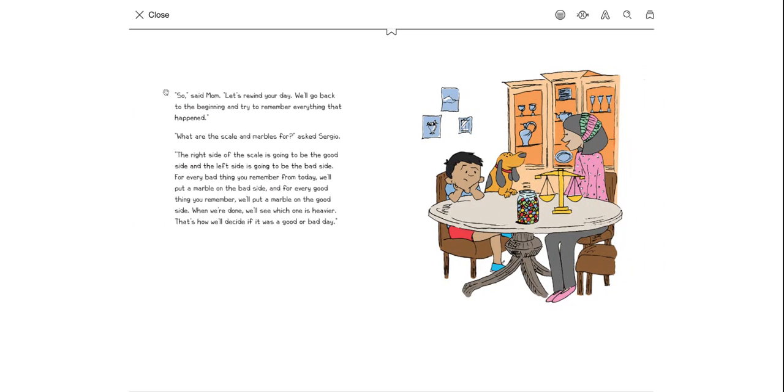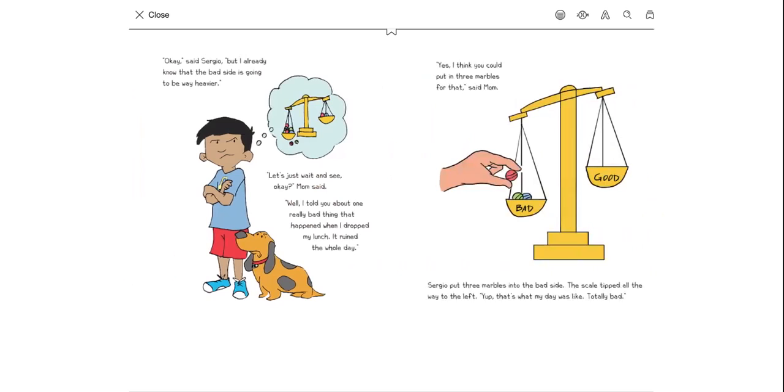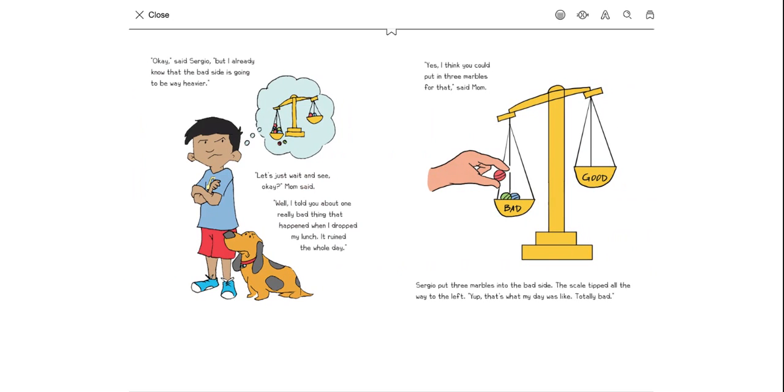So, said mom. Let's rewind your day. We'll go back to the beginning and try to remember everything that happened. What are the scale and the marbles for? asked Sergio. The right side of the scale is going to be the good side and the left side is going to be the bad side. For everything you remember from today, we'll put a marble on the bad side. And for every good thing you remember, we'll put a marble on the good side. When we're all done, we'll see which one is heavier. That's how we'll decide if it was a good day or a bad day. Okay, says Sergio. But I already know the bad side is going to be way heavier.